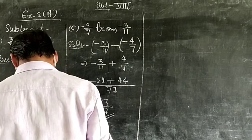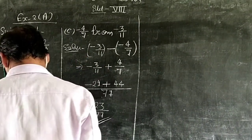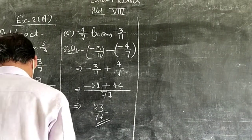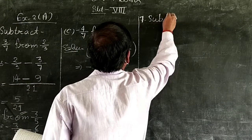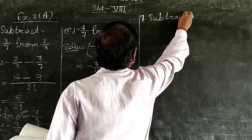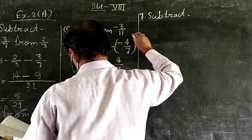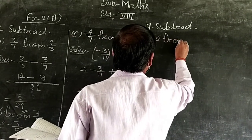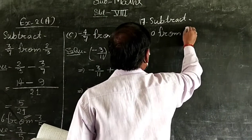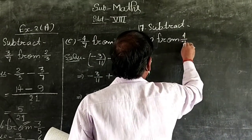Question 7: Subtract. Part A: 0 from 4 upon 7.